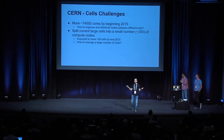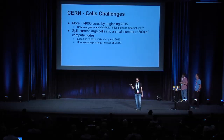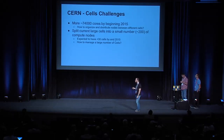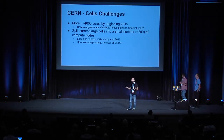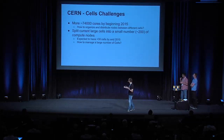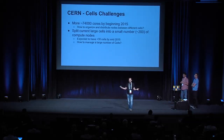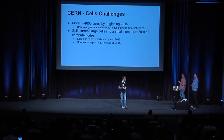What are the CERN challenges concerning cells over the next months? Until the end of the year, we're going to receive more hardware — more than 74,000 additional cores, basically doubling the capacity of the cloud. The problem is there are so few use cases running cells. Considering our expectation to have 200 nodes per cell, we're expecting to have more than 30 cells with all the hardware we have. The question is how can we manage all these cells considering the lack of experience and use cases? Now Matt will talk about the Rackspace use case.